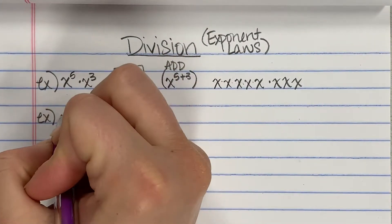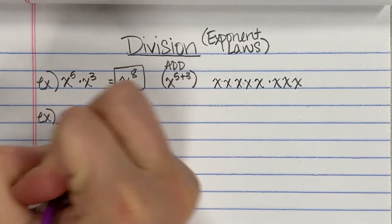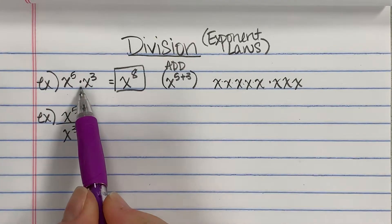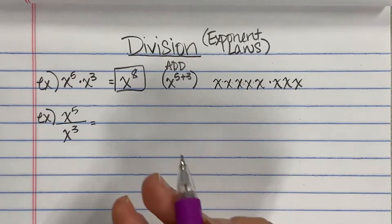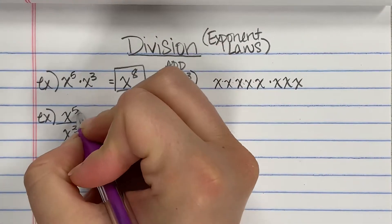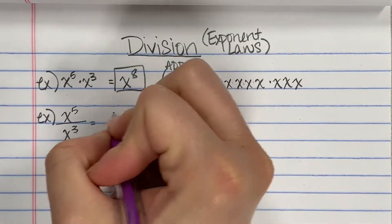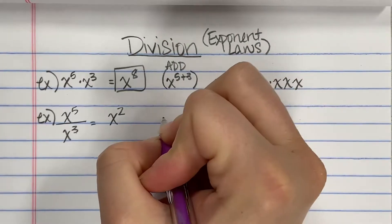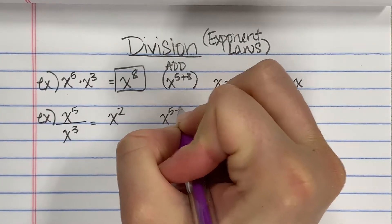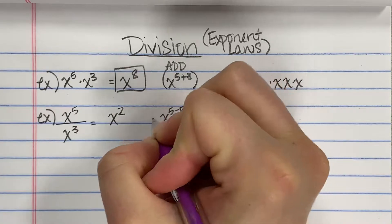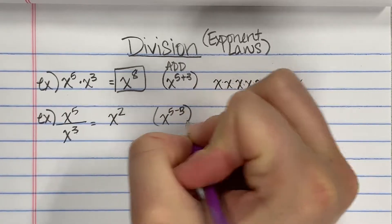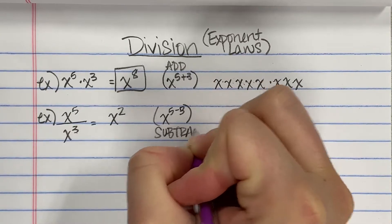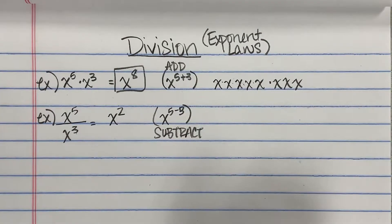So if we switch it just a little bit and say x to the fifth over x to the third — well, when it was multiplication we added them together. So it kind of makes sense that I would subtract these two for division and get x squared. That's really all it is: you're going to subtract in a division problem. Five minus three.